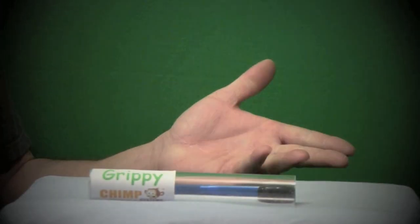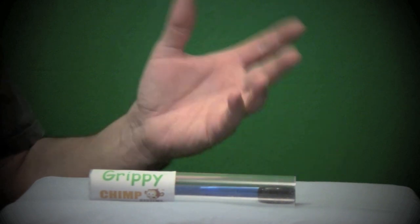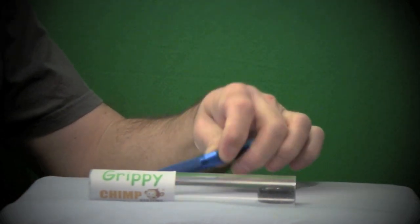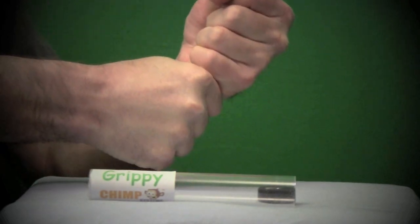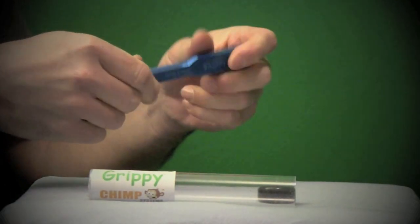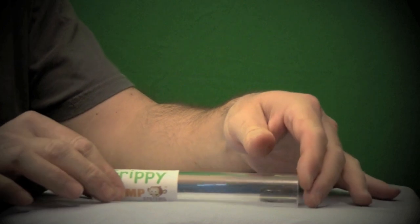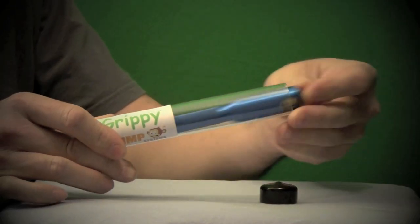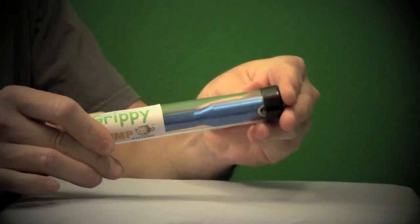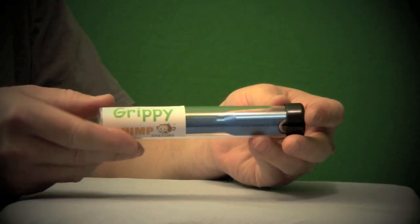Still not convinced you should buy a Grippy? Let's review. Number one: tough ergonomic handle, knurled non-slip surface, extra tough. Number two: very nice lifelong carrying case, toolbox friendly, keeps the tool protected in like-new condition forever. Very nice and made in the USA quality.